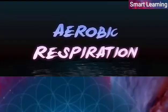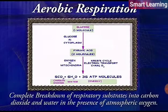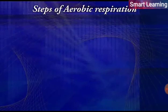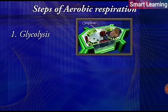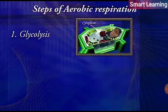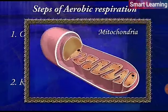Aerobic respiration: The complete breakdown of respiratory substrates into carbon dioxide and water in the presence of atmospheric oxygen is known as aerobic respiration. Aerobic respiration occurs in two steps: first, glycolysis, which occurs in the cell cytoplasm, and second, the Krebs cycle, which takes place in the mitochondria.